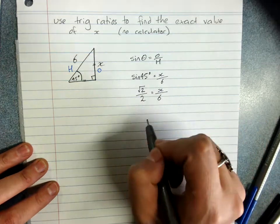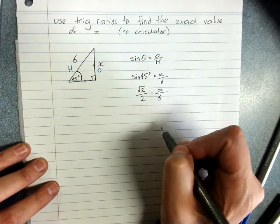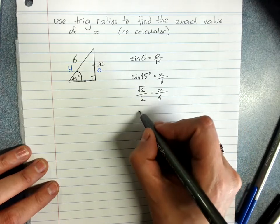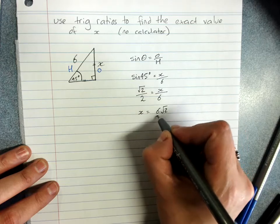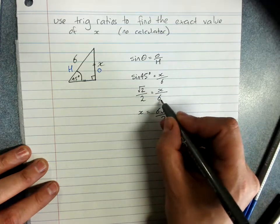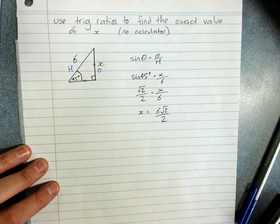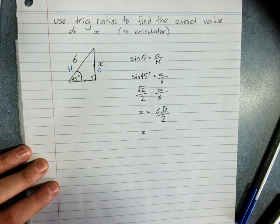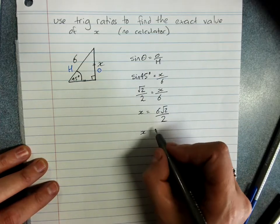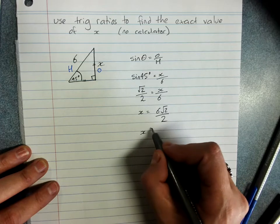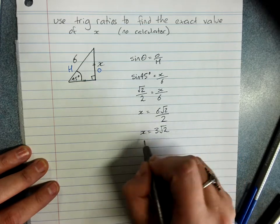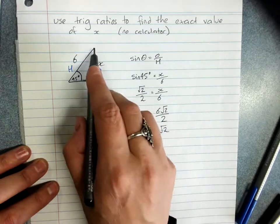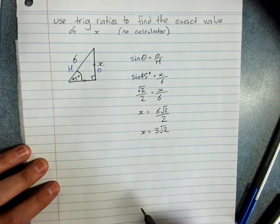I want x on its own. I would multiply both sides by 6. 6 times root 2 on 2. And if I can cancel, which I can here because I have a common factor of 3 and 2, I have 3 root 2. That is the exact value of the side x found without a calculator.